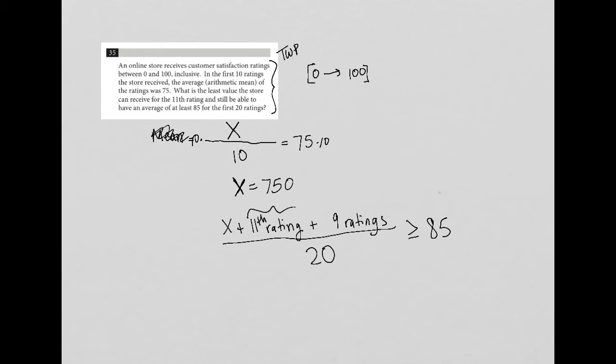Here's what I don't know. I know that X is 750, so I can add that in. I don't know the 11th rating, but I know I want it to be the smallest number possible and still be able to have an average of at least 85 for the first 20 ratings. I'm going to multiply both sides by 20. So 85 times 20 is 1700. And the 20s cross out on this side.